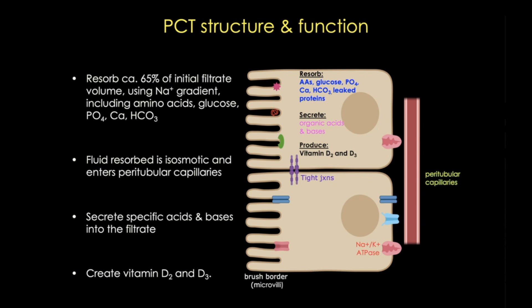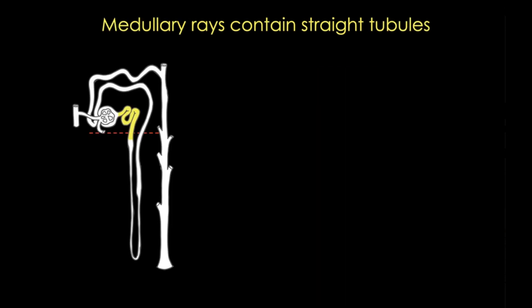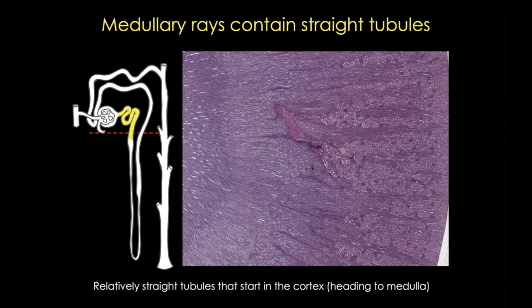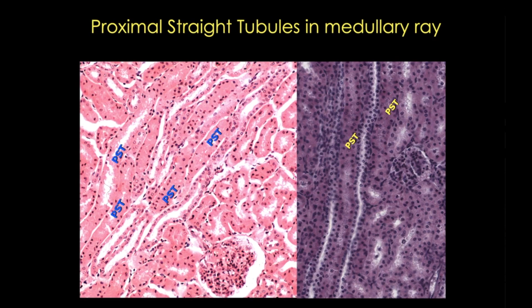Hopefully I've convinced you that the proximal convoluted tubule is a critical player in homeostasis. Going back to our cartoon, most of the proximal convoluted tubule is convoluted and in the cortex, but part of the tubule also helps form medullary rays — relatively straight tubules that start in the cortex and head toward the medulla. You can see these rays very nicely in this histological image. Zooming in, we see great examples of proximal straight tubules in these medullary rays — note again the lack of visible nuclei and the fuzz in the lumens. In these rays you can also see other tubules, part of the nephron loop and part of the collecting tubule system.